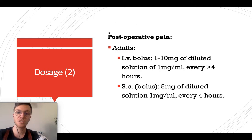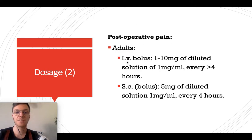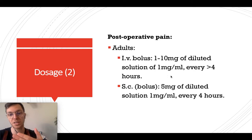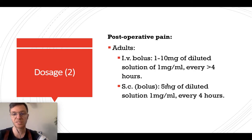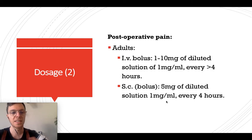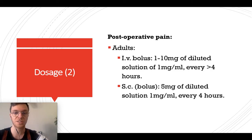For post-operative pain in adults via IV, you can give 1 to 10 mg of diluted solution at 1 mg/mL every four hours. Subcutaneously, give 5 mg of diluted solution at 1 mg/mL every four hours. This is only applicable in hospital settings.